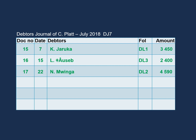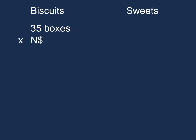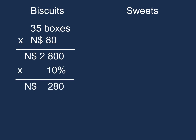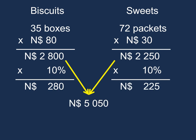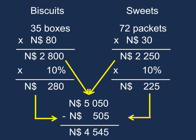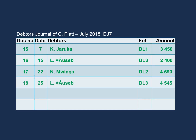Before we enter our last transaction, let's do the calculation. The items sold were biscuits and sweets. It was 35 boxes of biscuits at $80 each, coming to $2,800. The sweets were 75 packets at $30 each, coming to $2,250. The total sold was $5,050, less our 10% discount of $505, bringing the selling price to $4,545. This is the amount we enter in our debtor's journal. Our total for the journal is $14,985.